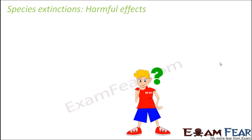There are harmful effects as far as species extinction is concerned. It disturbs the food chain because every living organism is in some way dependent on other organisms. When one particular species becomes extinct, the food chain gets disturbed because there might be other species that were dependent on it for food, and species that it used to eat. Both of these relationships get disturbed, so overall the food chain is disrupted.